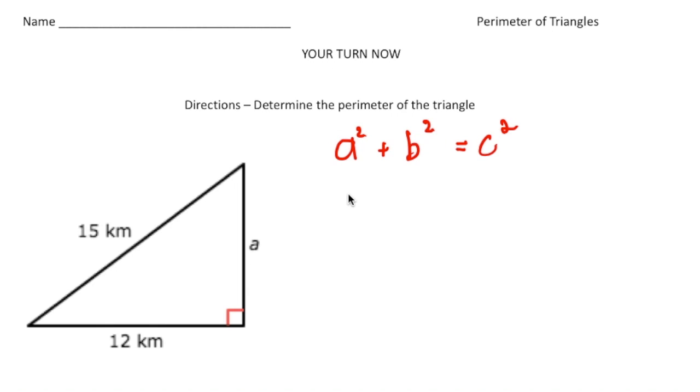So A is the unknown. So it's going to be A squared plus our B value is going to be 12. So 12 squared. And that's going to equal our C value squared, which is 15. So 15 squared.